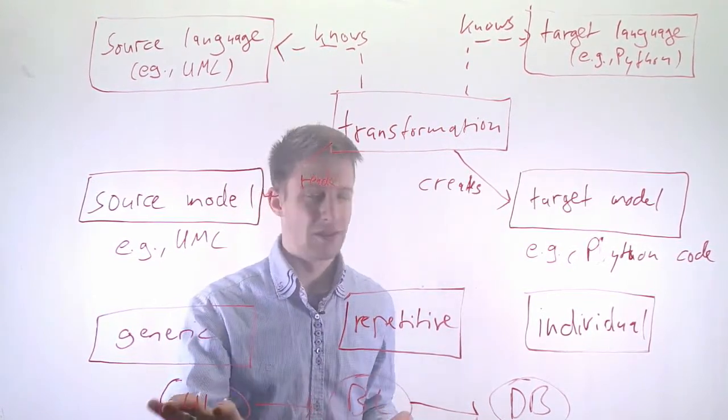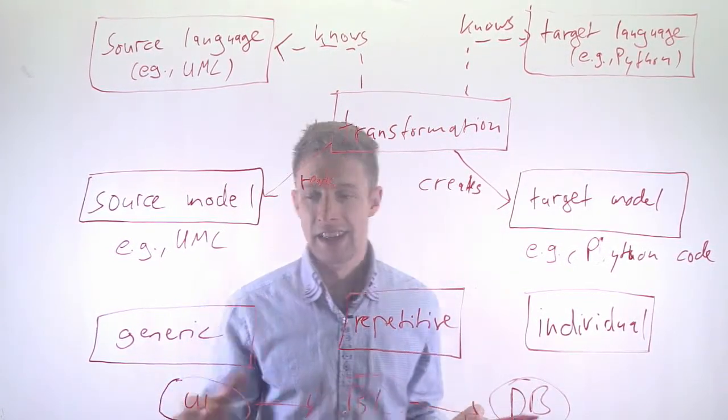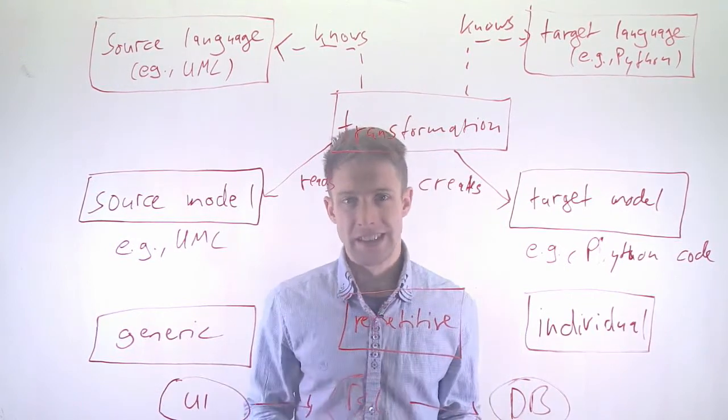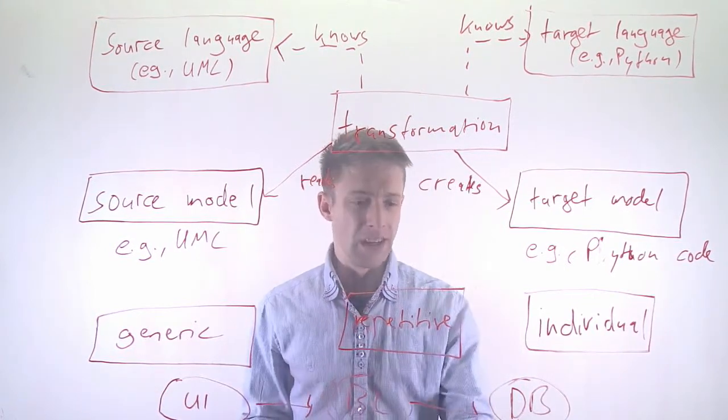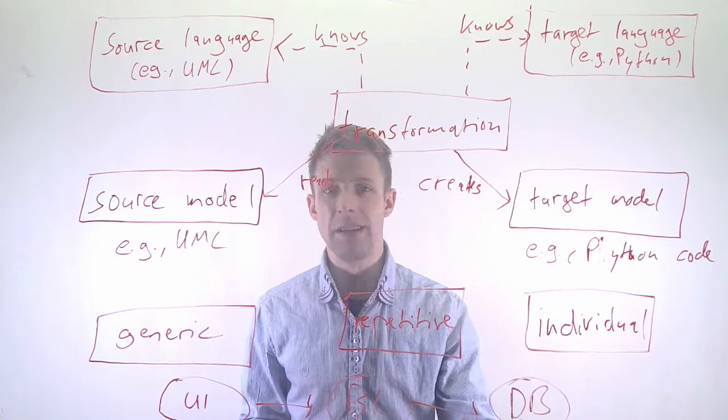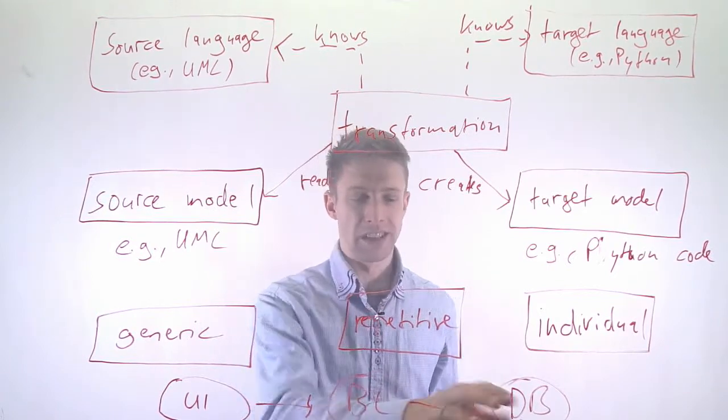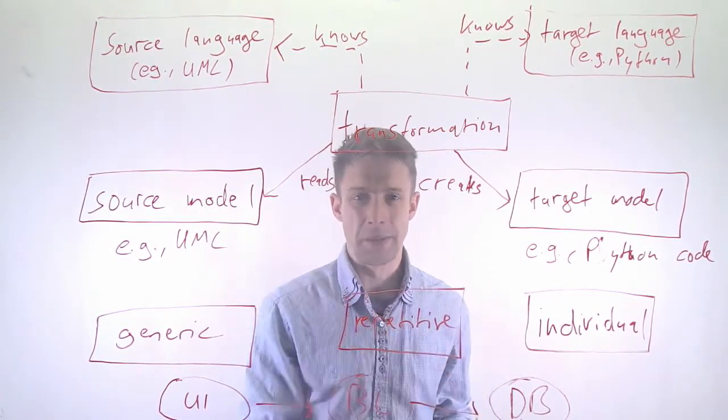There is certain repetitive code like UI components. The flow between pages is maybe the same all the time. Again, in your schema or in your object relational mapper, you might have certain code. It's very repetitive.